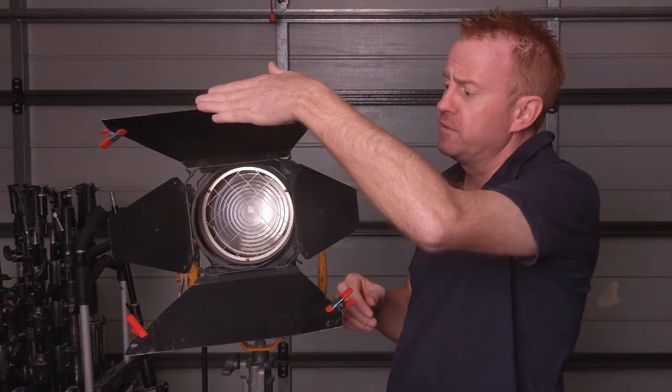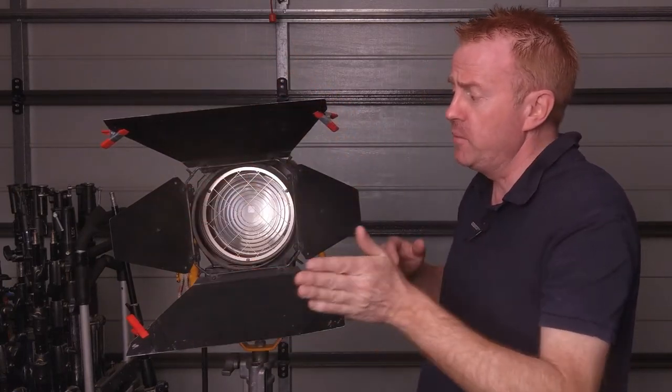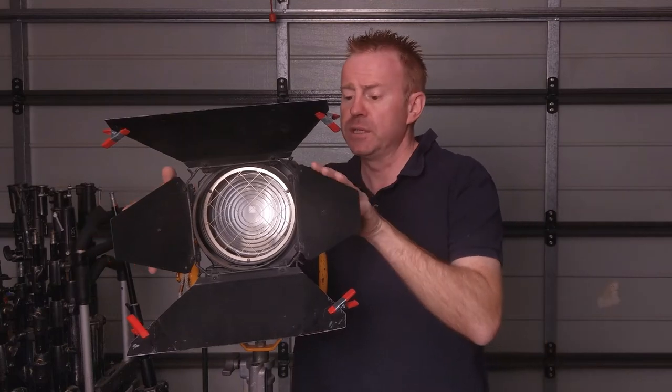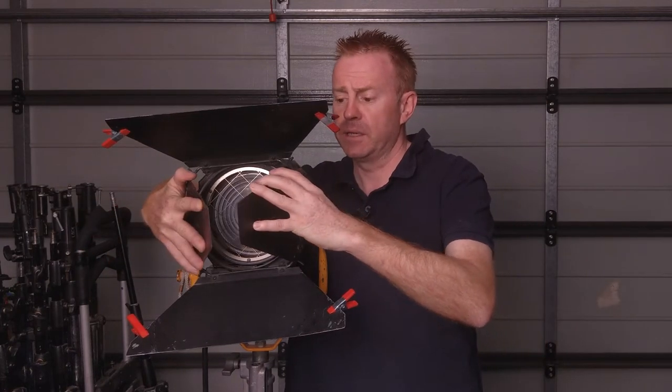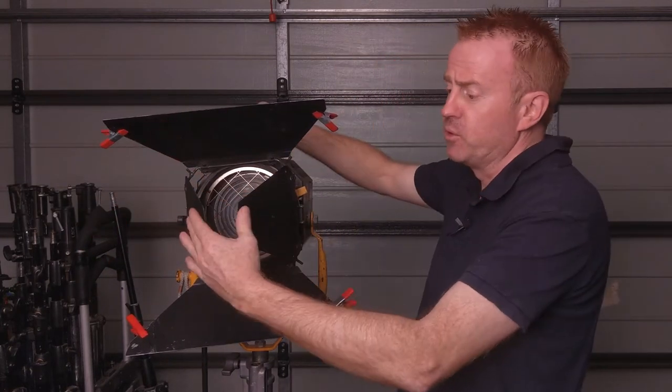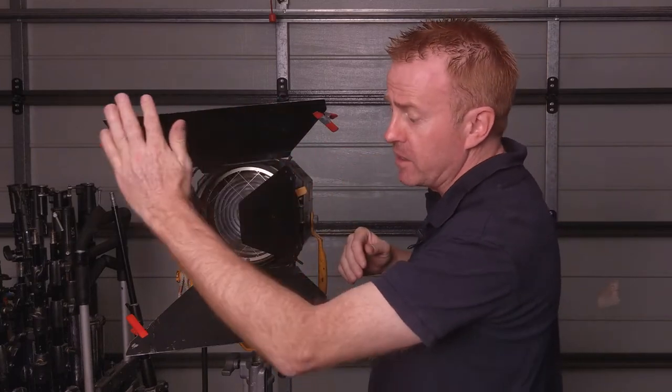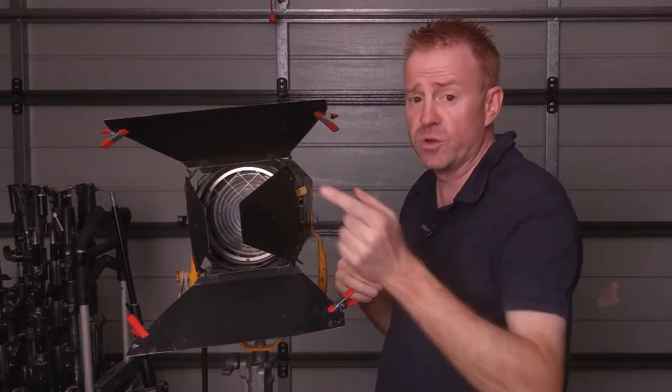I'm going to put that diffusion over the front and then we'll use the smaller barn doors and choke those in. Okay, so basically when we put the smaller barn doors in we're reducing the amount of light that hits the diffusion on the front.